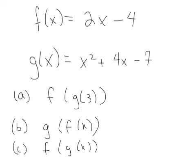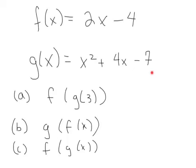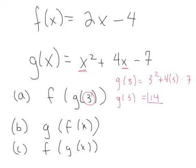Start from the inside and work outward. For f(g(3)), first find g(3): take this 3 and plug it in for x in g(x). g(3) = 3² + 4(3) - 7 = 9 + 12 - 7 = 14. So g(3) = 14.